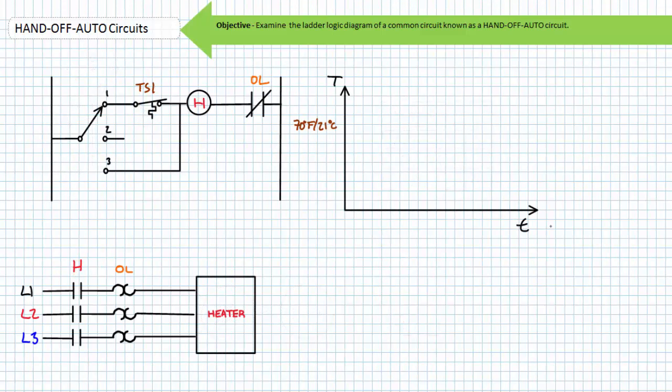This brings this short lecture to a close, but before we do, I leave you with this subtly modified hand-off-auto circuit. This time utilizing a maintained contact, single pole, triple throw with center off switch used instead of the three-position selector switch.